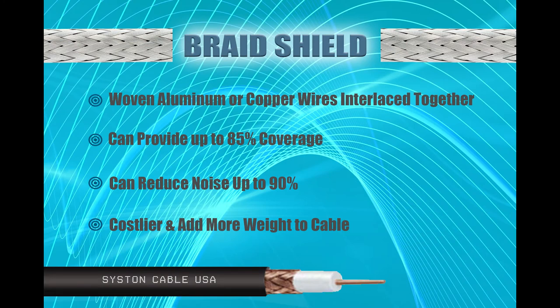Braid shielding is constructed by weaving aluminum and copper wires interlaced together. It can reduce noise up to 90%. Braid shielding can cover up to 85% of the wire, and signal noise can leak between gaps in the braided weave design. This amount of coverage should be sufficient, especially where the application does not require constant movement or flexing.